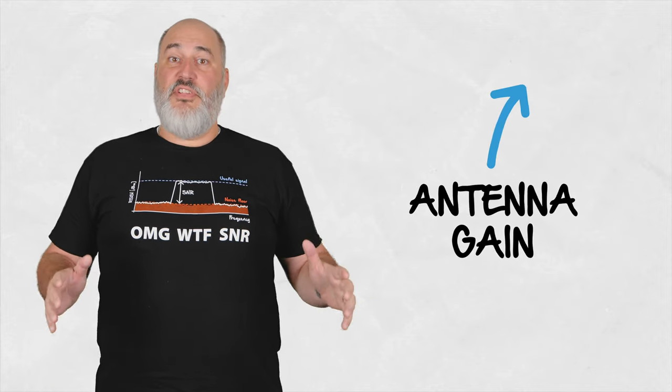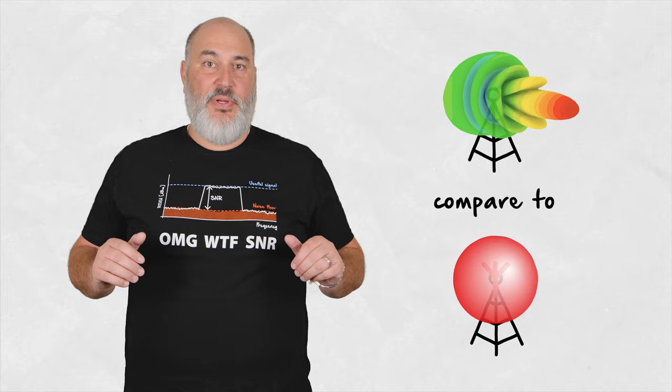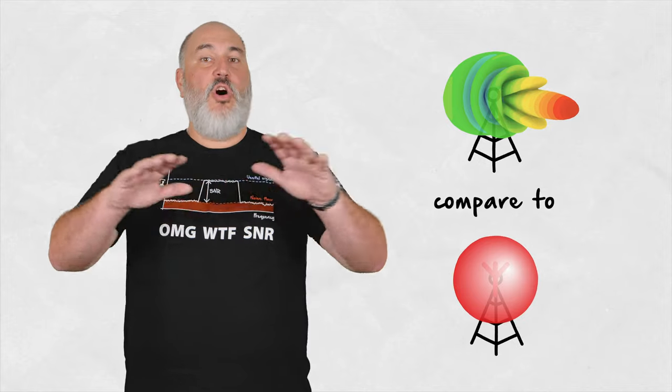For more on that, check our previous videos about antenna gain here. Antenna gain is the measure of how much an antenna concentrates its electromagnetic energy compared to an ideal isotropic antenna which radiates equally in all directions.